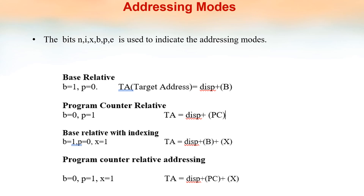Next is program counter relative addressing. Here bit P equals 1 and B equals 0. The target address is calculated as displacement plus the content of the program counter. Base relative with indexing means B equals 1, P equals 0, and X equals 1. Program counter relative with indexing means B equals 0, P equals 1, and X equals 1. The target address is displacement plus content of PC plus content of the X register.